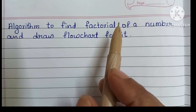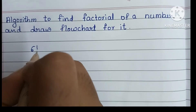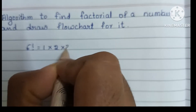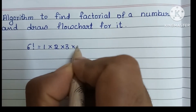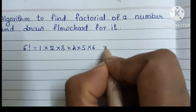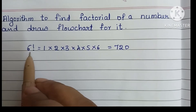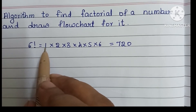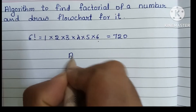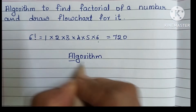Factorial of a number is the product of all integers from 1 to that number. For example, factorial of 6 is the product of all integers from 1 to 6: 1 into 2 into 3 into 4 into 5 into 6, which equals 720. Next we have to write the algorithm. An algorithm is a step by step process to solve a problem.